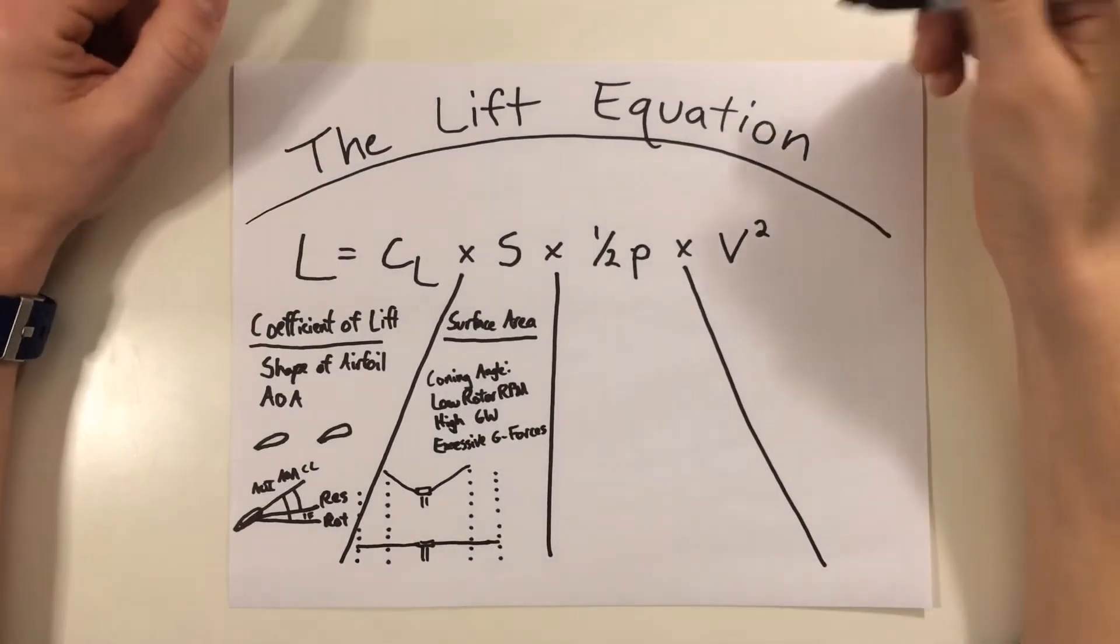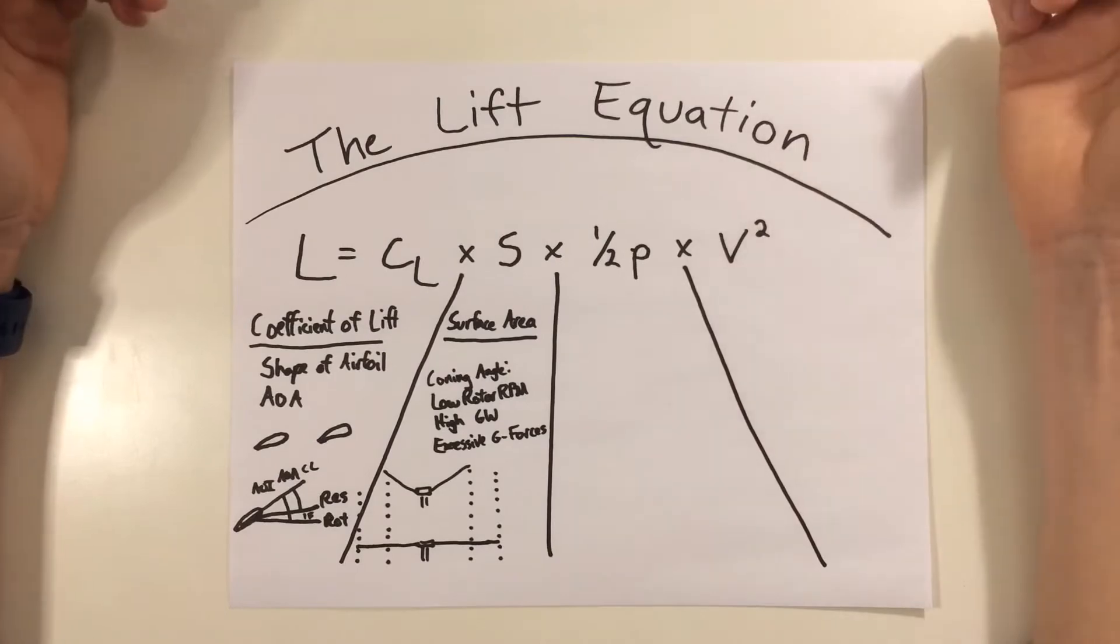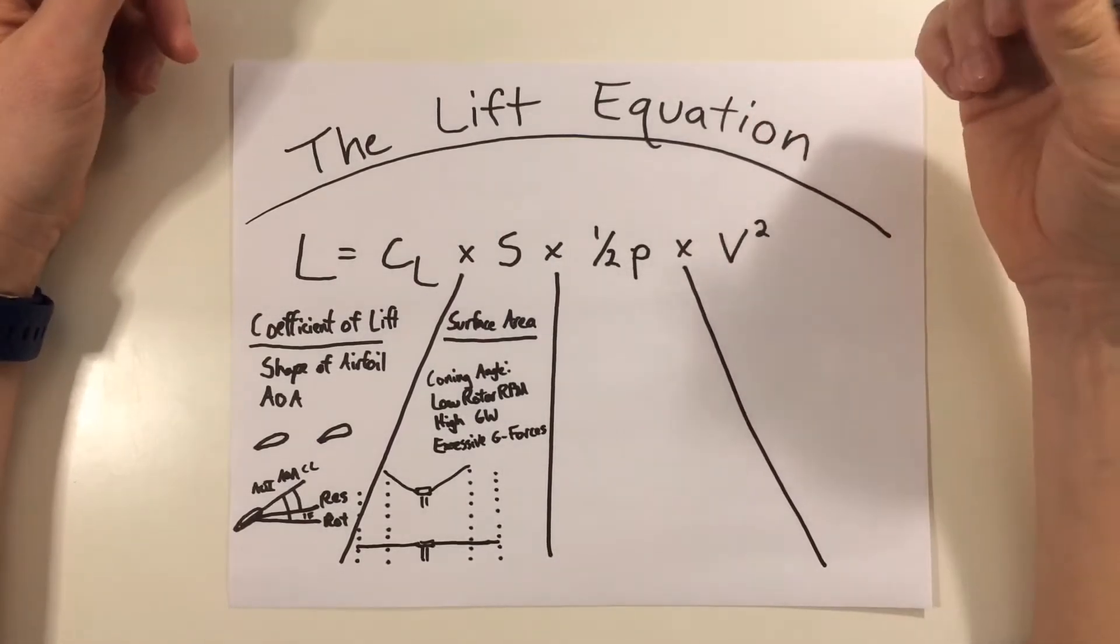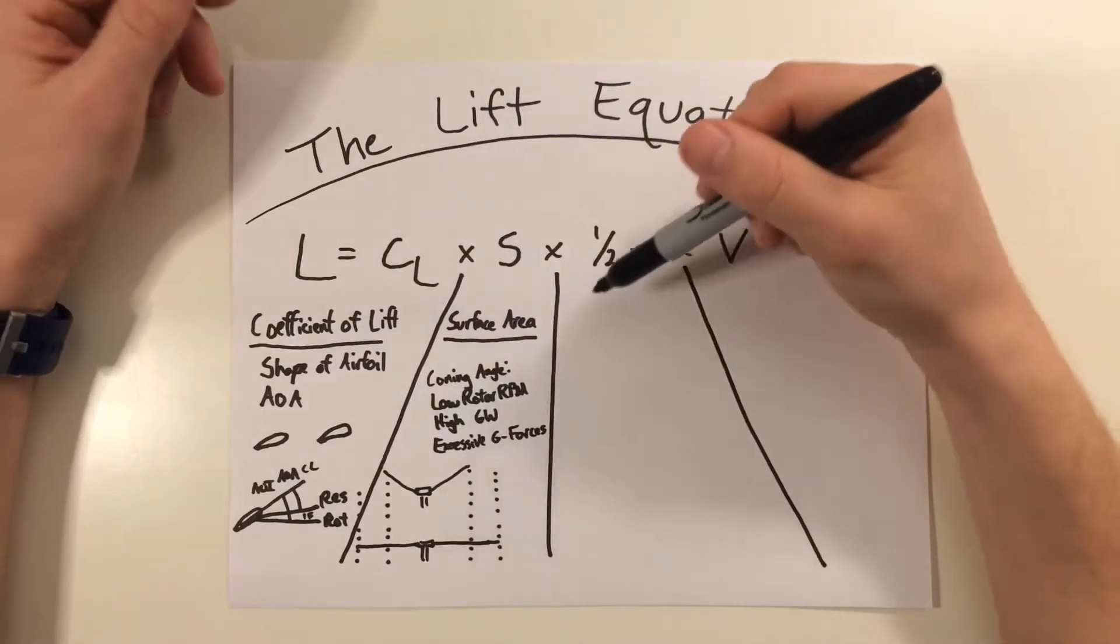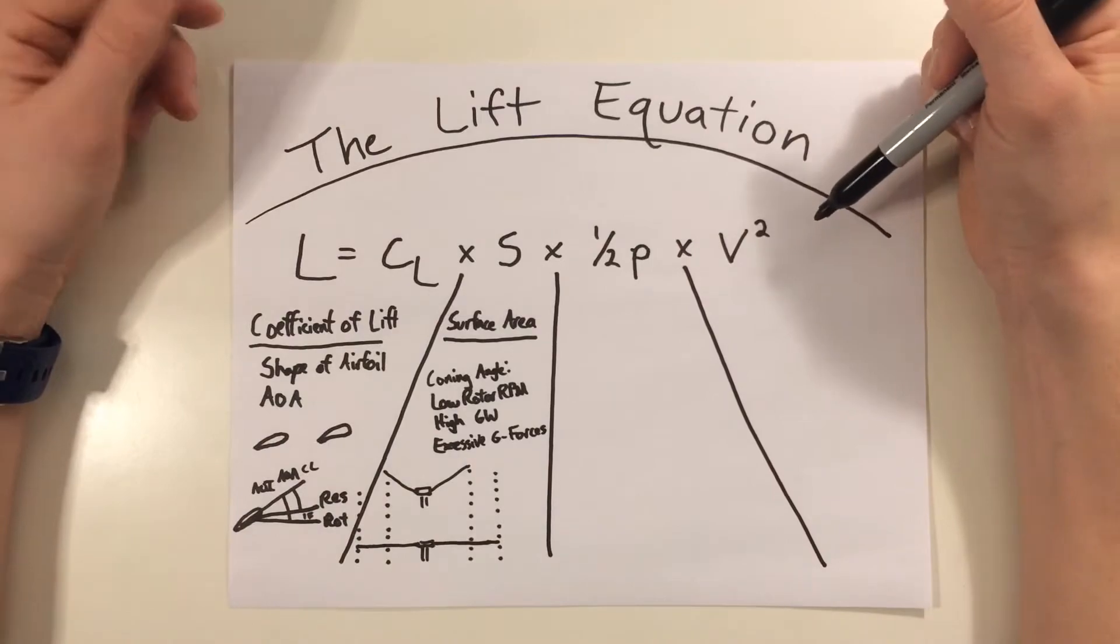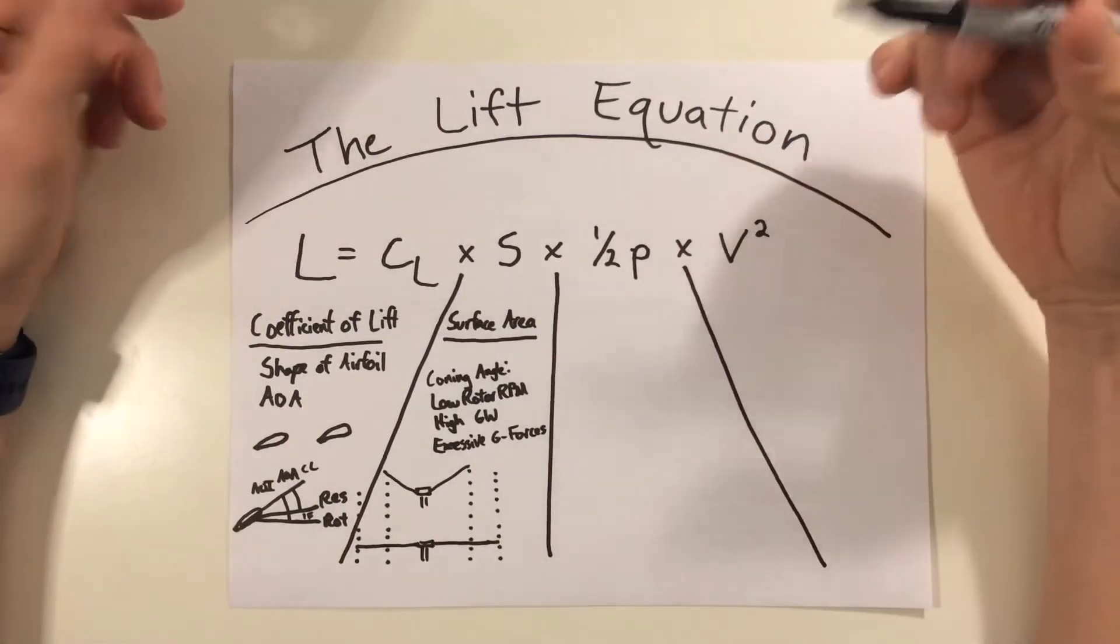Welcome back to helicopter lessons in 10 minutes or less. It's Jacob again and this is part two of the lift equation. I recommend watching the first video before going into part two. The first video we talked about coefficient of lift as well as surface area. In this video I want to go over air density and getting into velocity squared and from there just wrapping up everything in the formula.